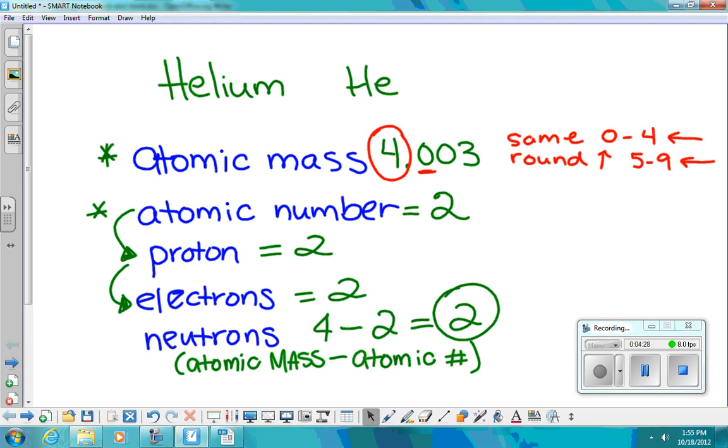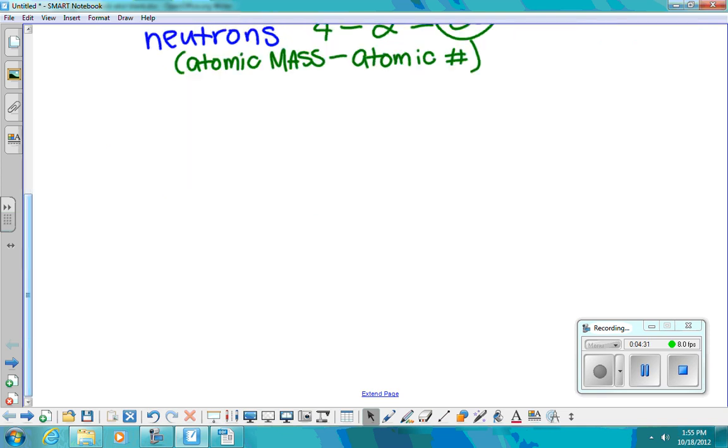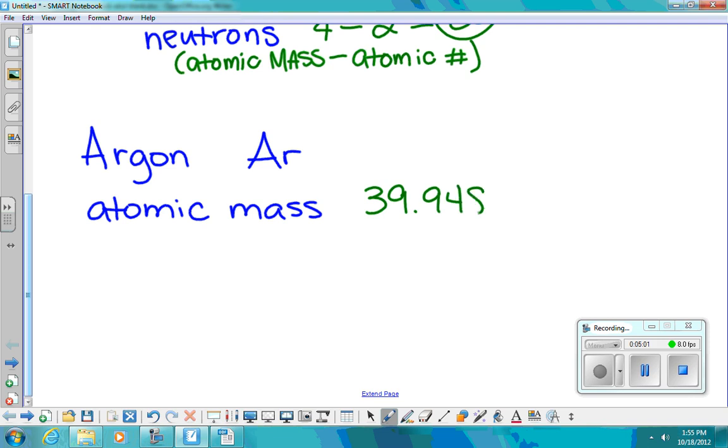Let's do another one together. So let's do argon. And the symbol is Ar. The atomic mass is 39.948. And we're going to look at that first digit again. That's a 9, so that means we're going to round up to 40.